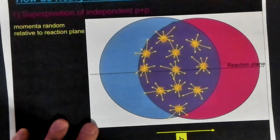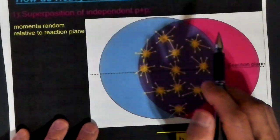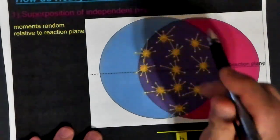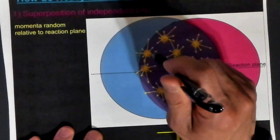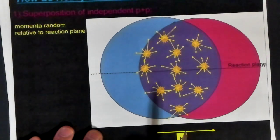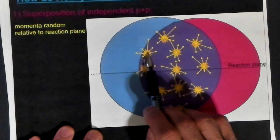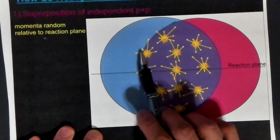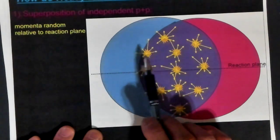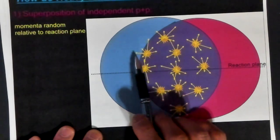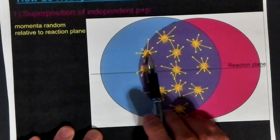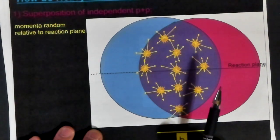If we have an independent particle-particle model, how this heavy ion collision works, then we have a whole bunch of nucleons colliding. Each nucleonic collision will have some random distribution of particles flying out. So on average, you would expect to see some isotropic distribution of particles coming from each collision.